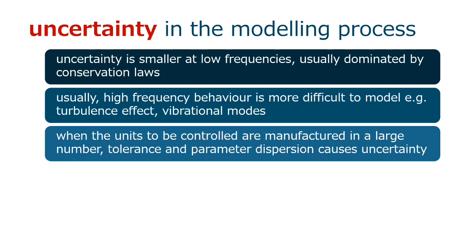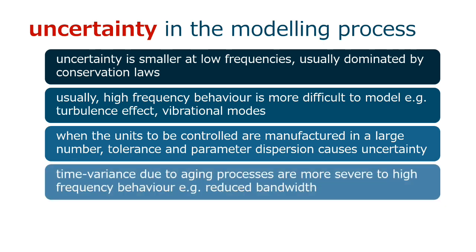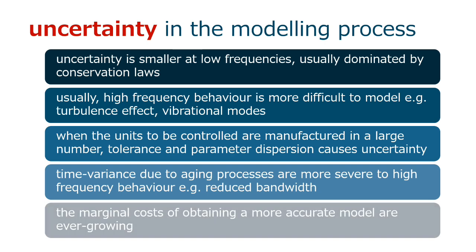When the units to be controlled are manufactured in a large number, tolerance and parameter dispersion causes uncertainty. Time variance due to the aging process are more severe to high frequency behavior. For instance, reduced bandwidth. And the marginal costs of obtaining a more accurate model are ever growing.